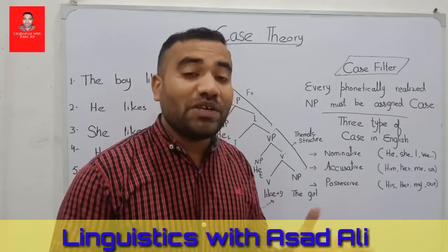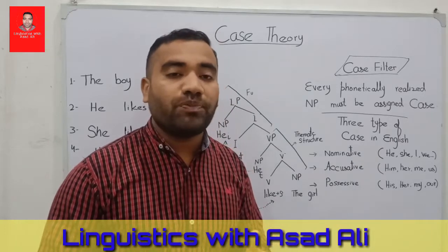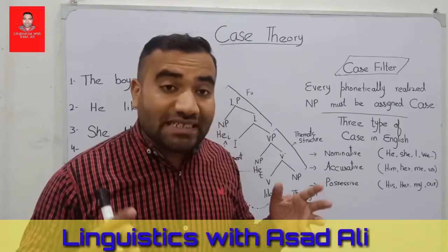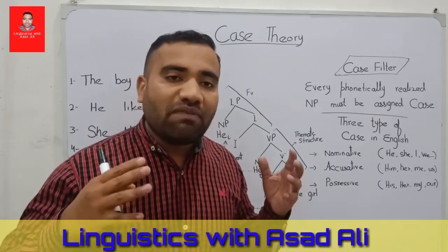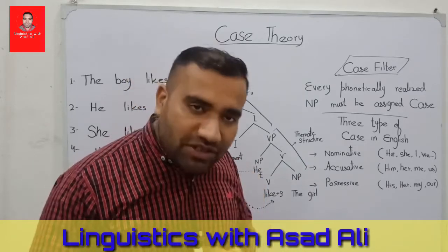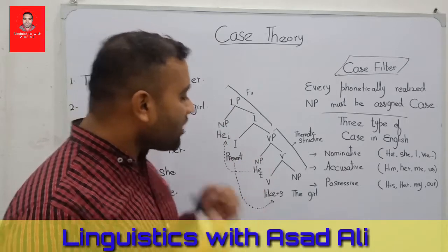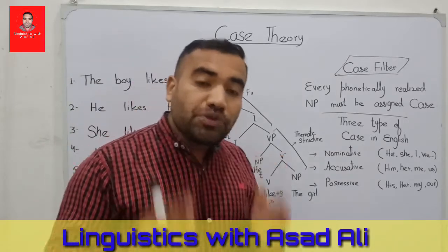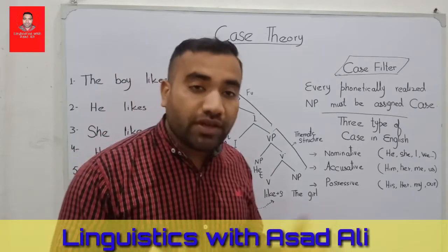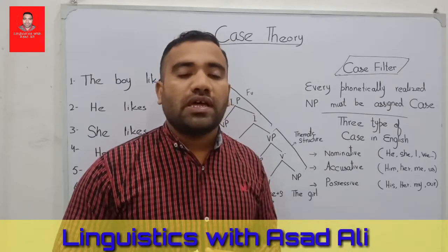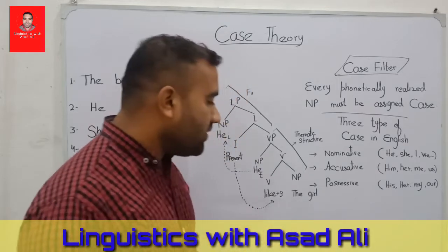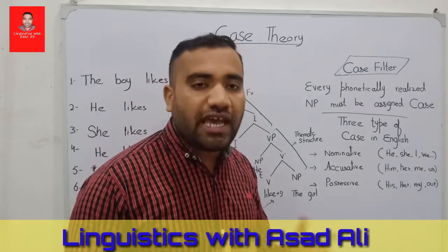At the thematic structure level, we see that there are two DPs taking part, and we assign theta roles to both DPs. The function of the lexical V is that it assigns the theta role to 'the girl,' and the second potential of V is that V also assigns the accusative case to that NP.